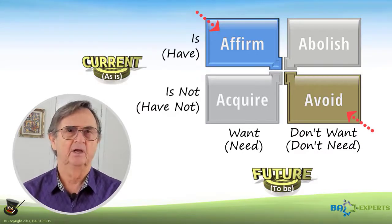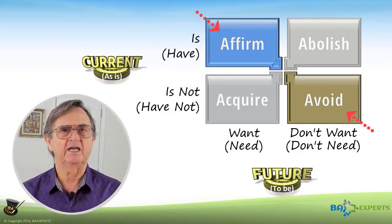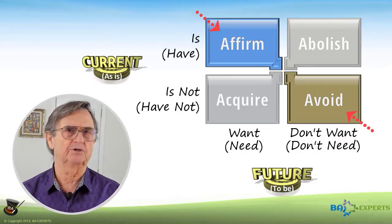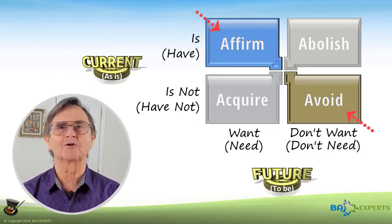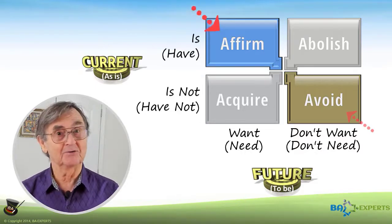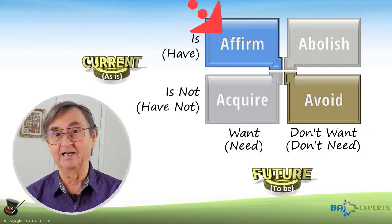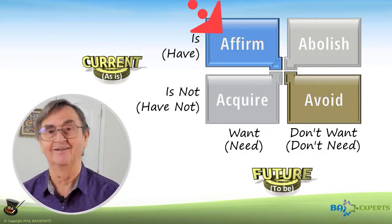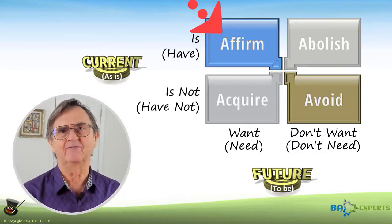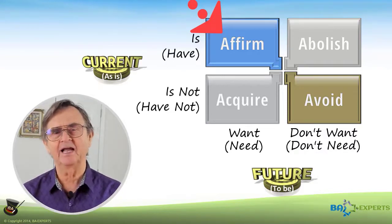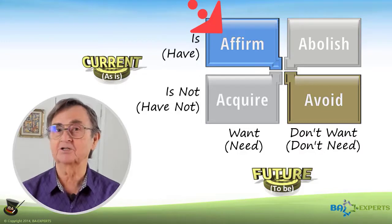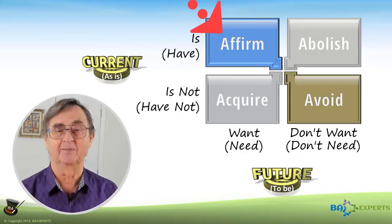For example, if you're designing a new cell phone which you can control with your thoughts alone, you still need to affirm that it needs to be able to place a phone call. What seems obvious to a domain expert is not necessarily so to the developer's mind.